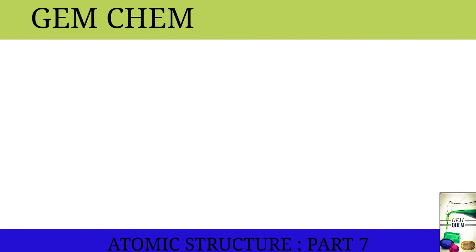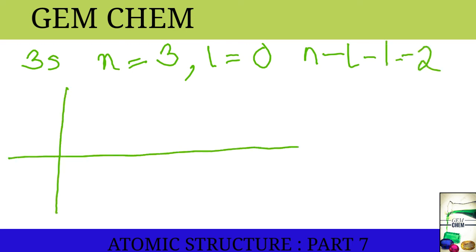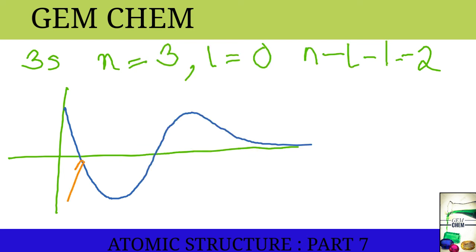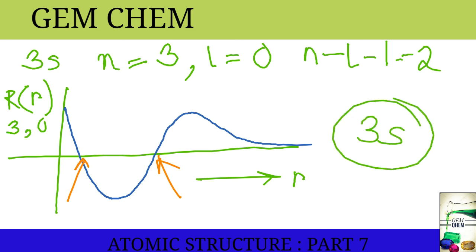For 3s actually, the n equals to 3 and l equals to 0. So, the number of nodes becomes n minus l minus 1 equals to 2. The curve is like this. It comes down, goes up and then decreases. There are 2 nodes present here and here. This axis is known as R(r), and the subscript is written as 3, 0 and this part is our r. This was for 3s orbital.